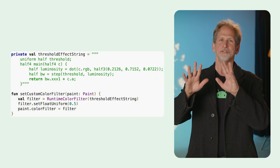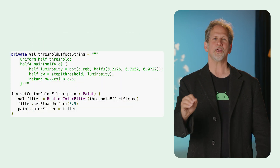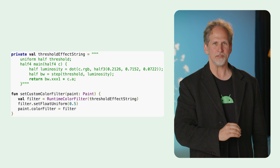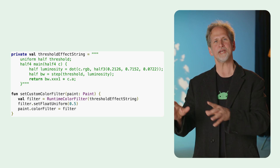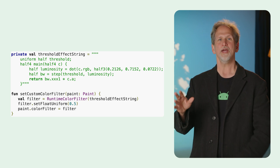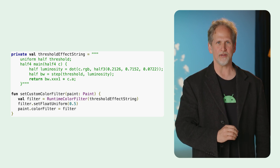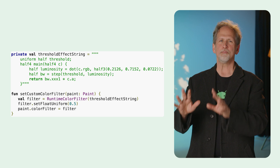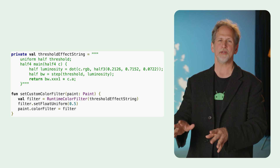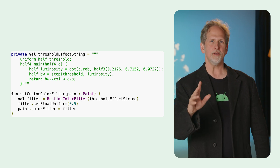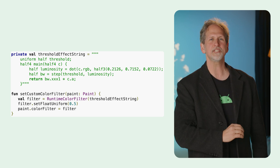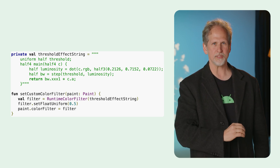Android 16 brings new APIs for custom graphical effects, like runtime color filter and runtime transfer mode powered by AGSL. It also has important accessibility updates, including a new API for supplemental descriptions.